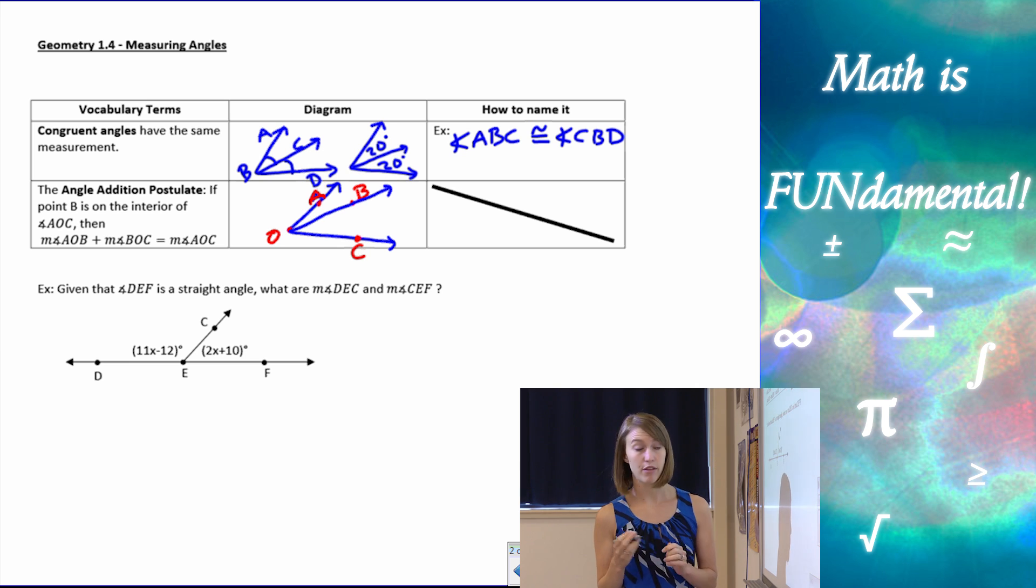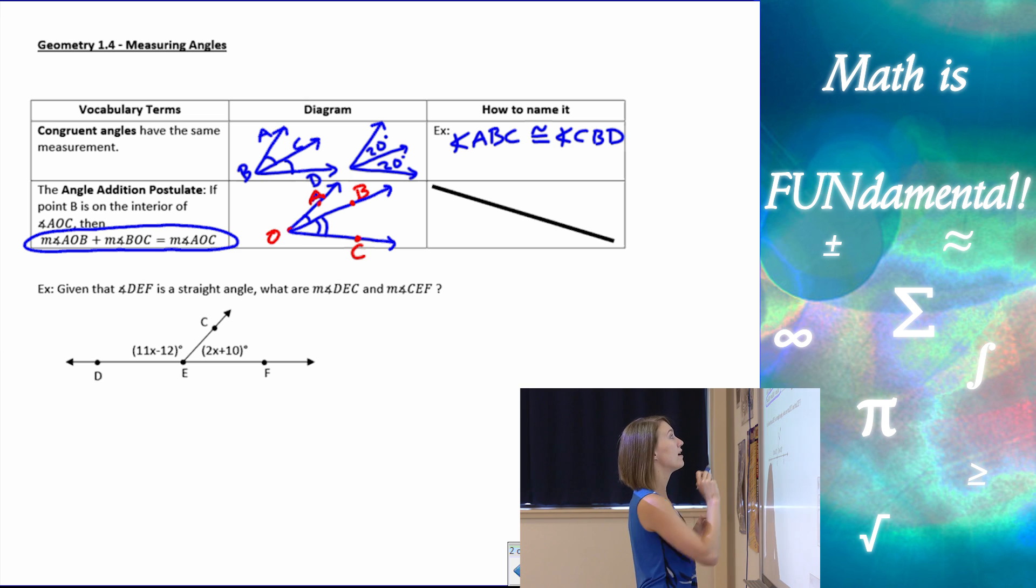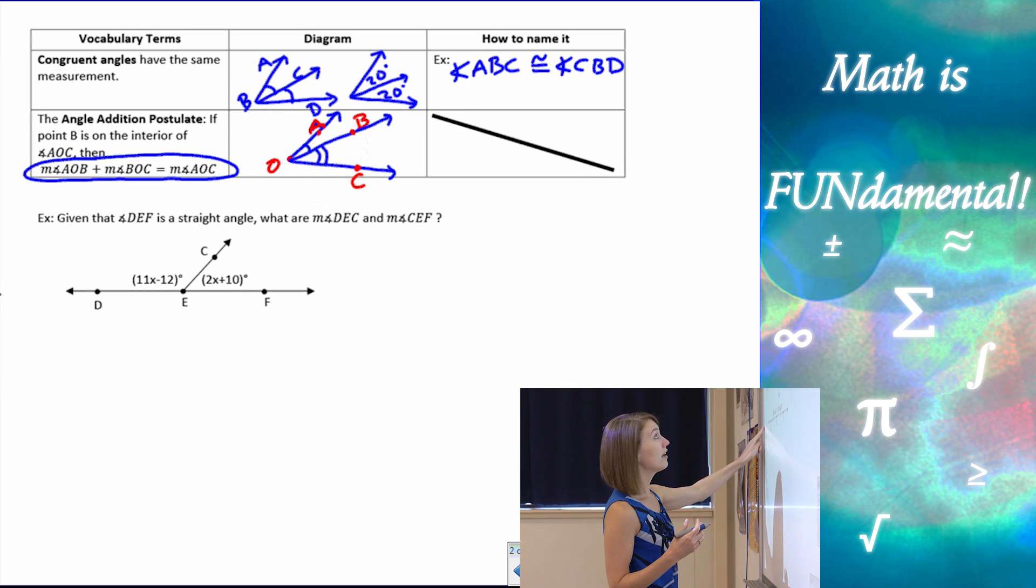But if I take angle AOB here, and I add it to angle BOC, I get the whole angle. Just because I split it up doesn't mean that angle AOC has changed. So that little equation here, measure of angle AOB plus the measure of angle BOC equals the measure of AOC is what our angle addition postulate is.